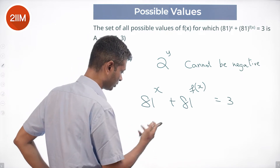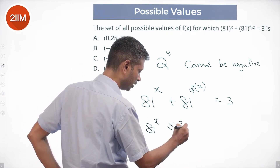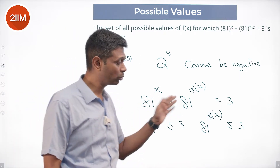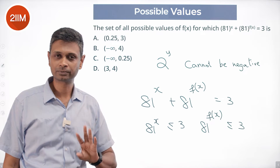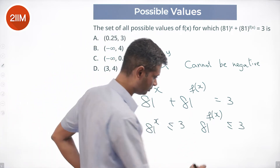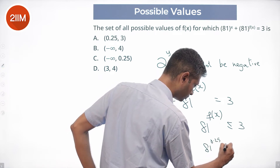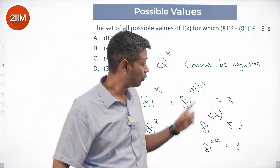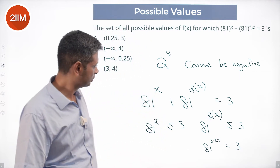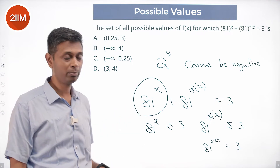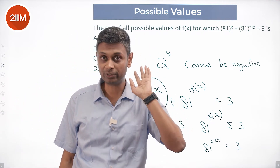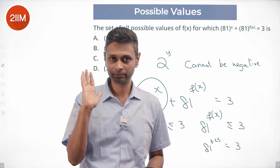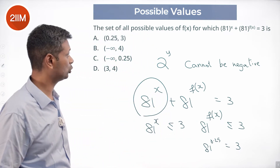What we can notice here is: 81 power x is less than or equal to 3, and 81 power f of x is less than or equal to 3. Neither can be negative, and neither can be more than 3. Since 81 power 0.25 equals 3, x has to be less than or equal to 0.25. If f of x equals 0.25, then the other part has to go to 0 — that means 81 power minus infinity — so f of x cannot be 0.25, but can be anything up to 0.25.